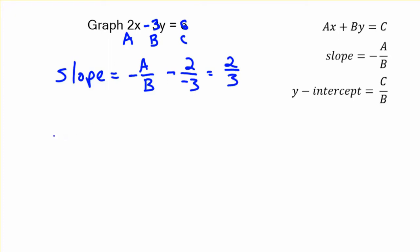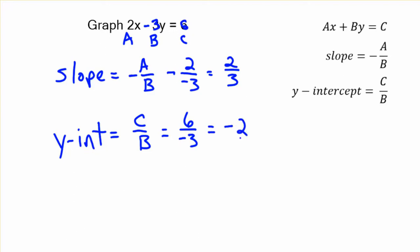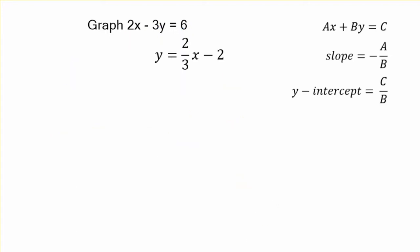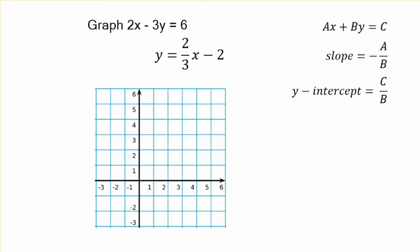What about the y-intercept? The y-intercept is just c over b. c is 6 and b is negative 3, so we write 6 divided by negative 3 — positive divided by negative gives you negative 2. So y equals 2 thirds x minus 2. We've transformed it into slope-intercept form, which is much easier to use than standard form when graphing.